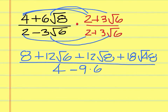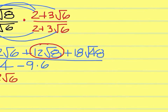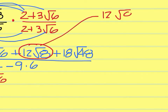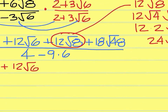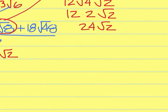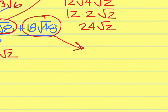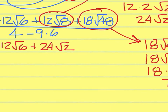On the top, let's simplify where we can. 8 is okay, and so is 12 square root of 6. But 12 square root of 8 needs to be simplified: 12 square root of 8 is 12 square root of 4 times square root of 2; square root of 4 is 2, so multiply to get 24 square root of 2. Then 18 square root of 48: the 48 breaks up as 16 and 3, square root of 16 is 4, and 18 times 4 is 72, so that becomes 72 square root of 3.